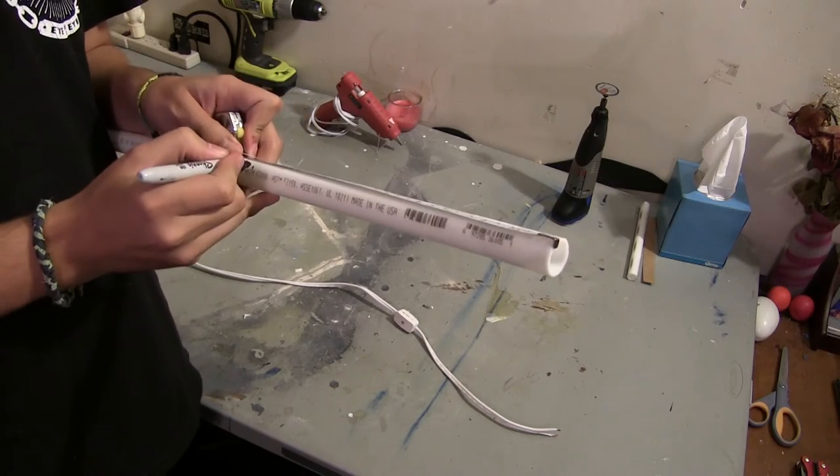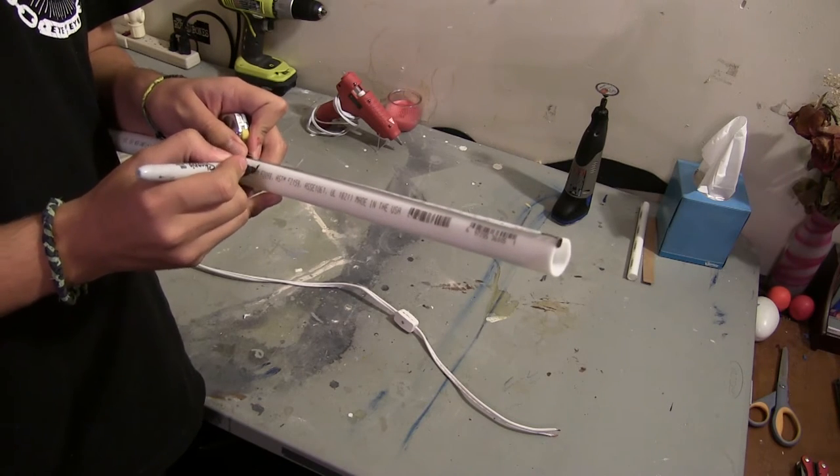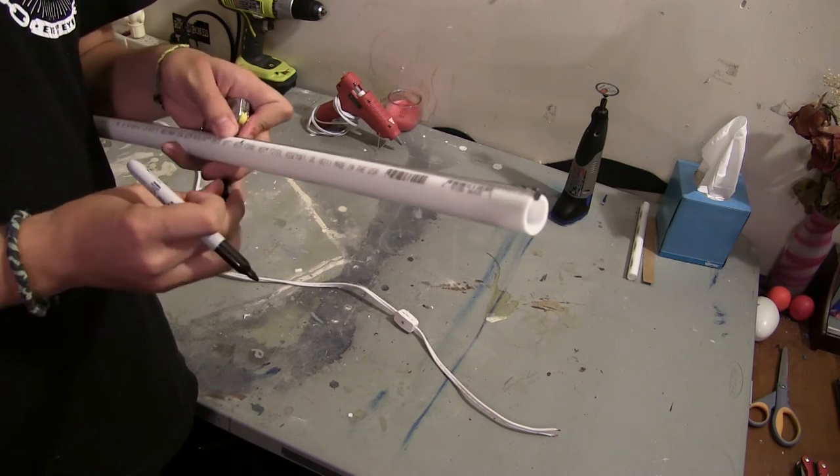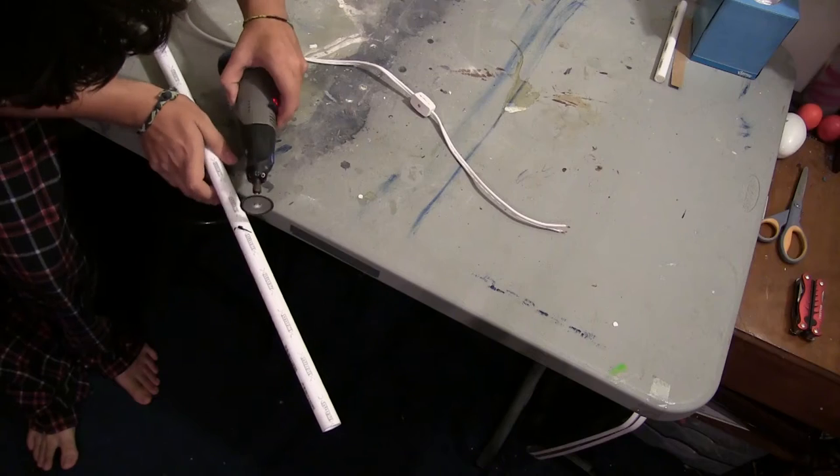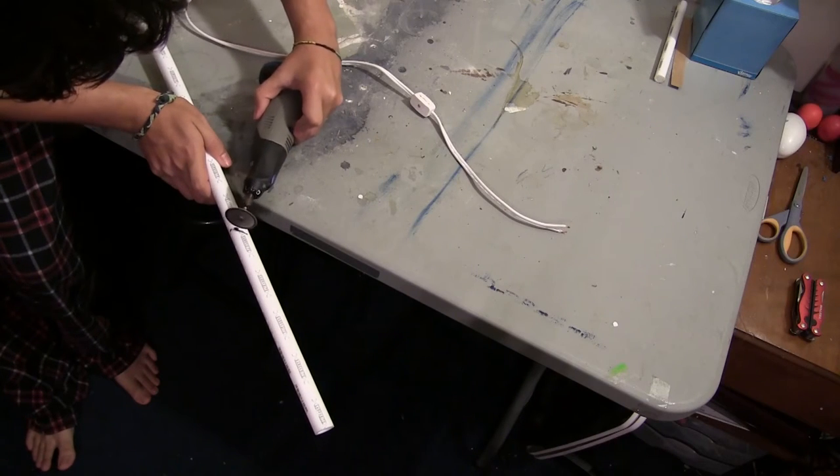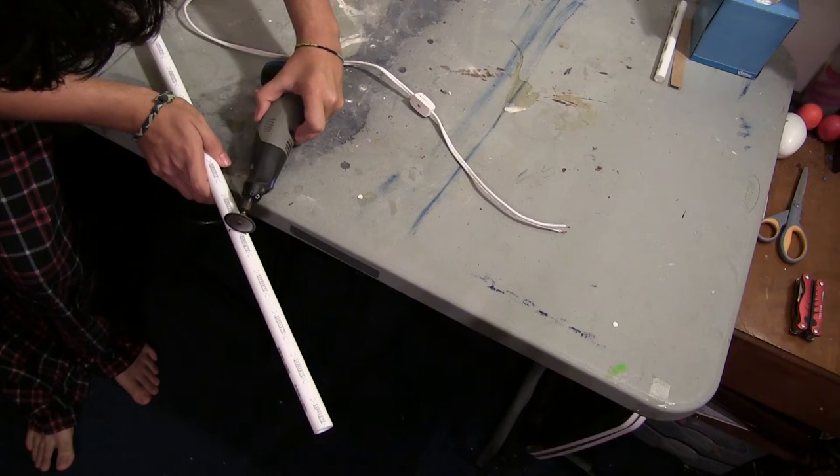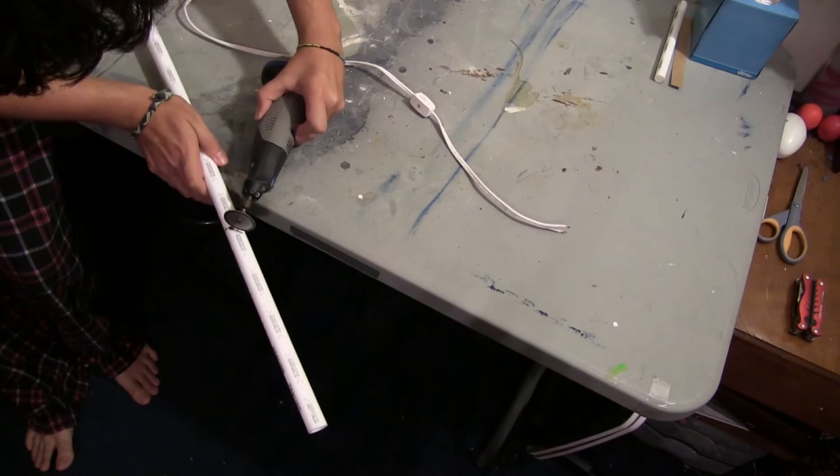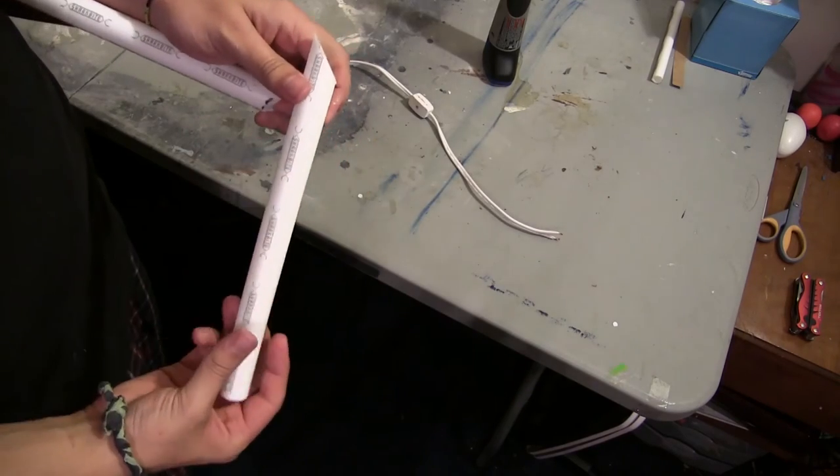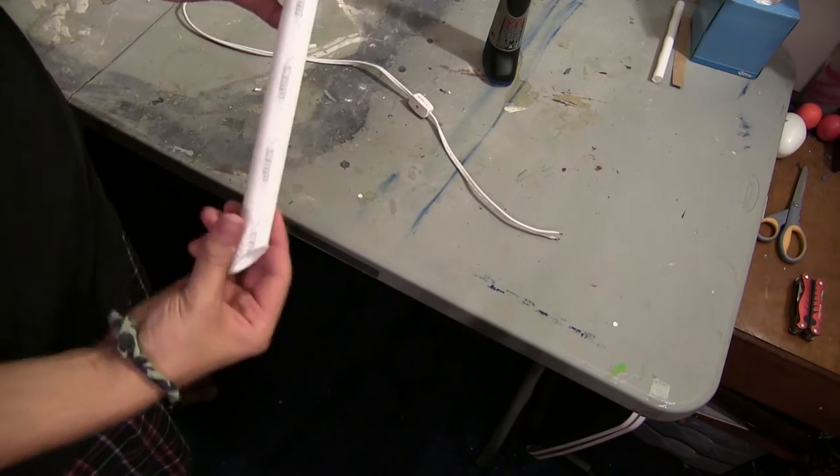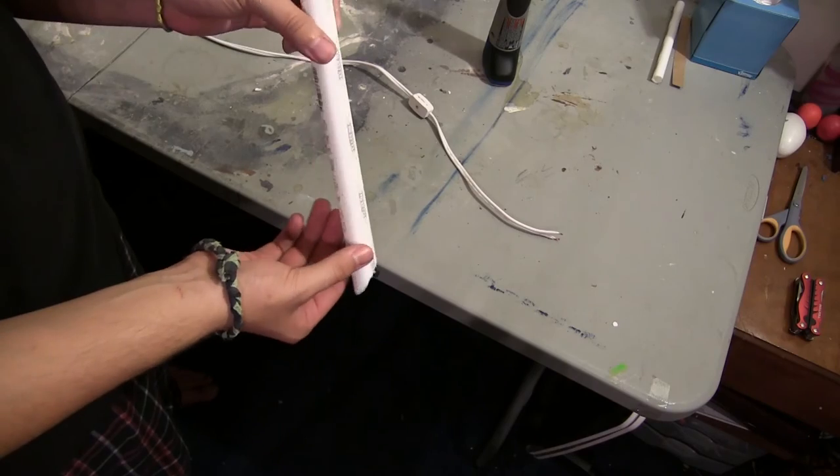So the first thing we're going to do is measure the three quarter inch PVC pipe down to about ten inches and mark that. And then we're going to cut it at a 45 degree angle where we marked it. So use the dremel or hacksaw. And it should look like this. One flat side and one side cut at a 45 degree angle.